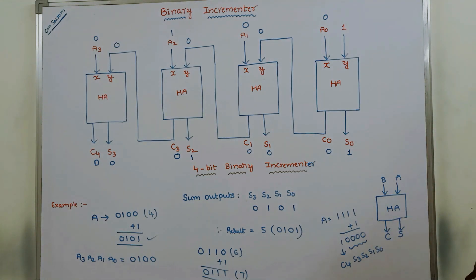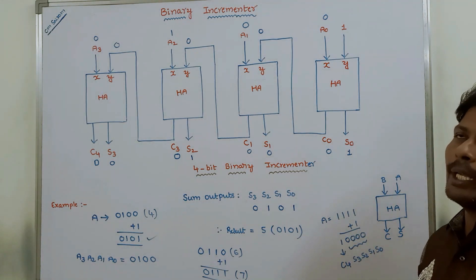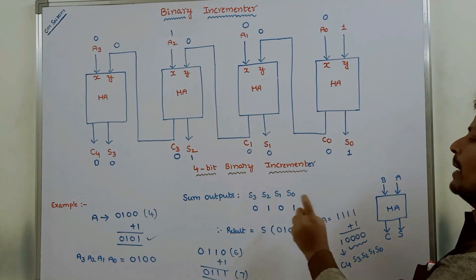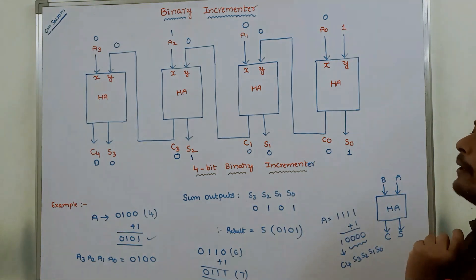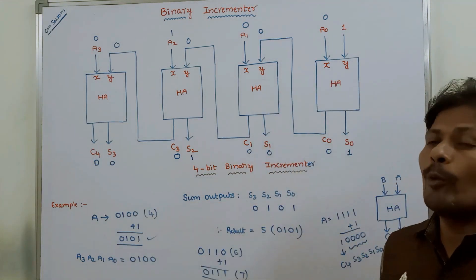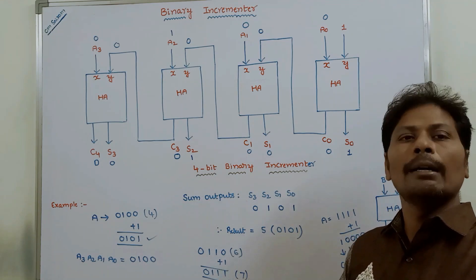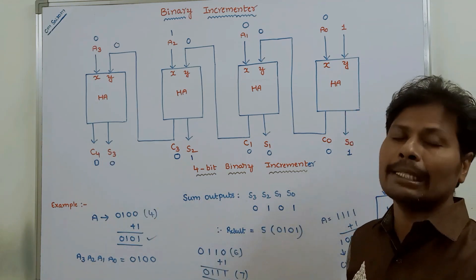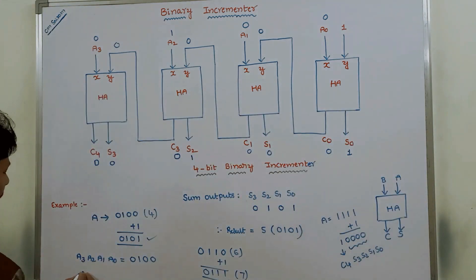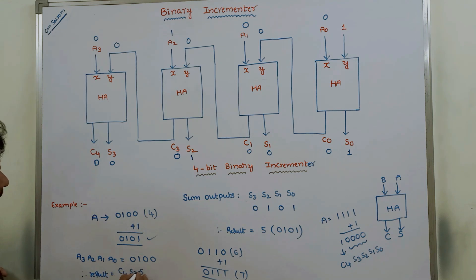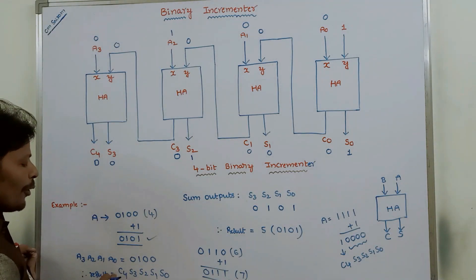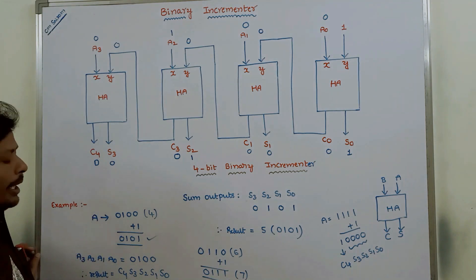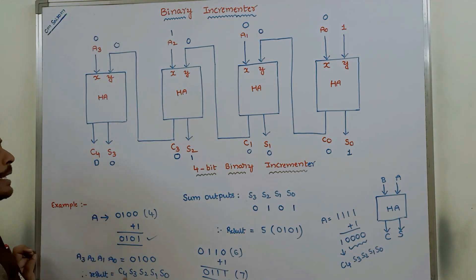This is the description of the 4-bit binary incrementer. The sum output is always stored in bits S3, S2, S1, S0. If the C4 bit value is 0, we ignore it in the result. If the C4 bit value is 1, we must include it in the result. Therefore, the full result is C4, S3, S2, S1, S0, where C4 is only considered when it equals 1.